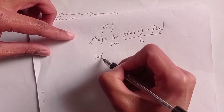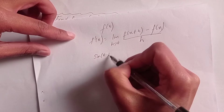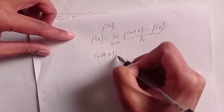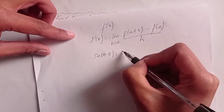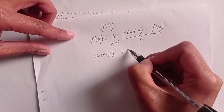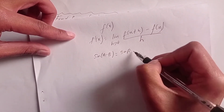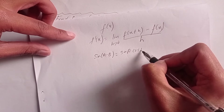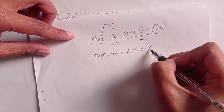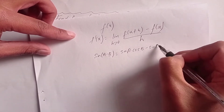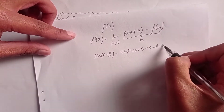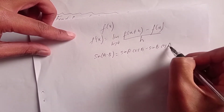We will also use the identity: sin(a minus b) equals sin a dot cos b minus sin b dot cos a.